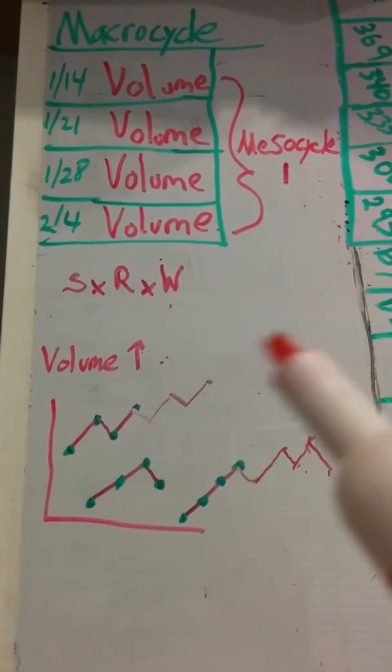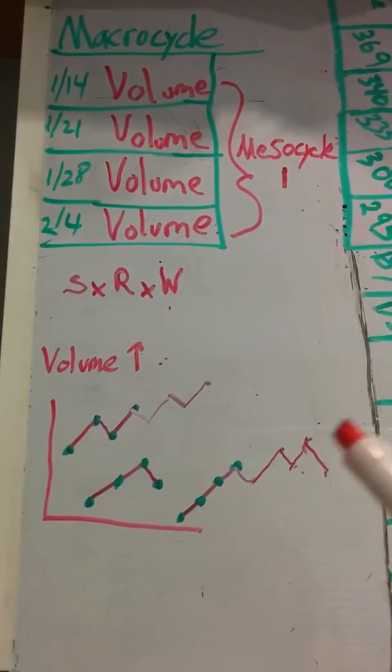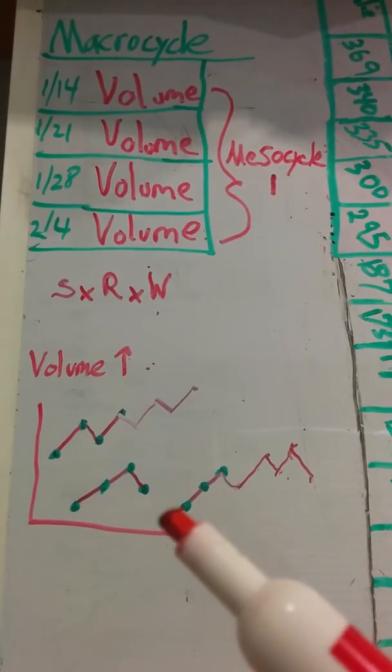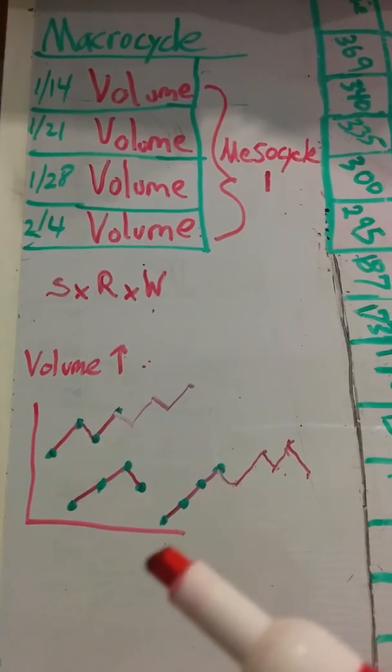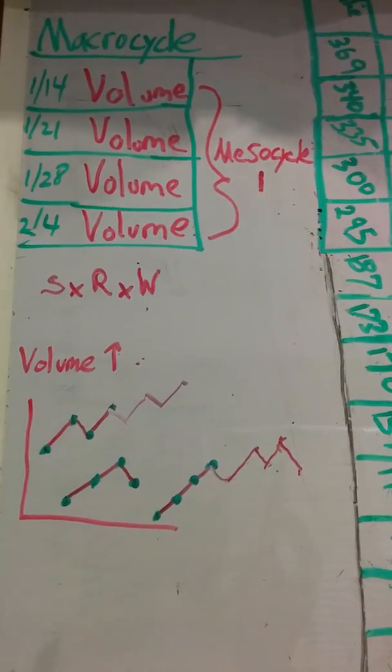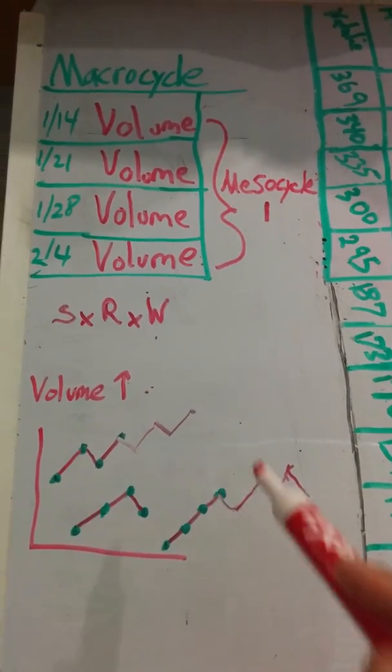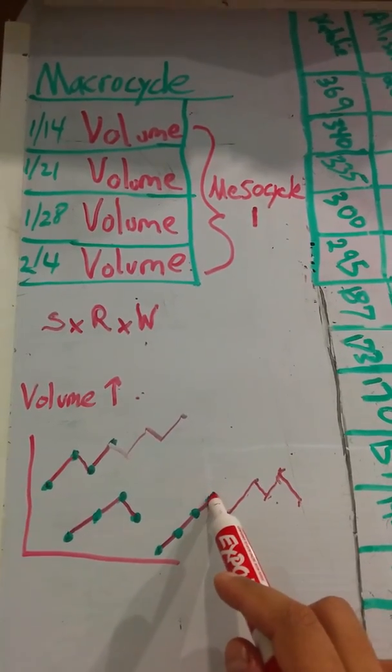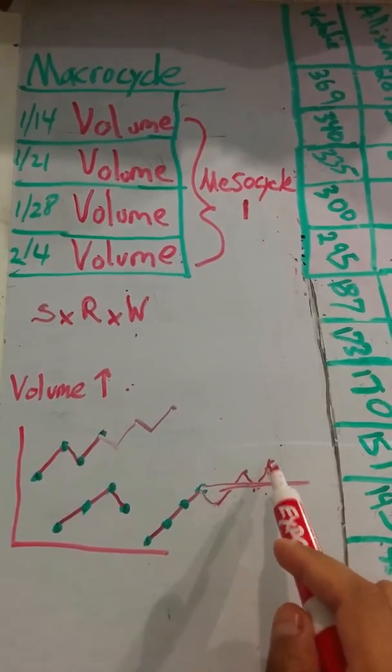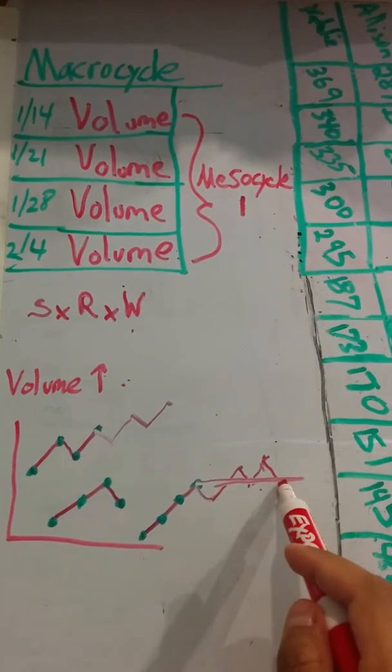And you can do the same thing if you set up your mesocycle to be a strength block, and you set up what are the goals for that strength block. So the goal might be to hit specific PRs on assistance lifts that you know are going to help build your competition lift. Or maybe you want to keep the volume as high as you can. So maybe you want to keep the volume at this level. Now that you've adapted to this higher level,